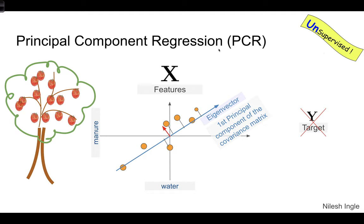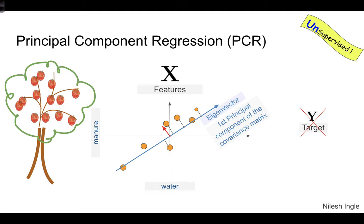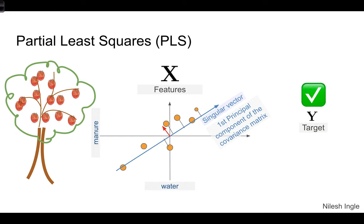This PCA approach is unsupervised — when performing the dimensionality reduction to find the new feature direction, we do not include the target data. That's one key difference when we talk about partial least squares: in PLS we do account for the target information. What we find instead is a singular vector, and we treat that singular vector as a new feature for training the model.